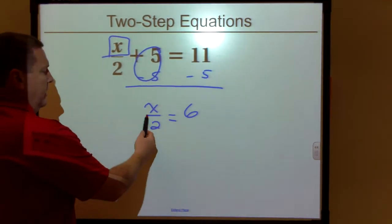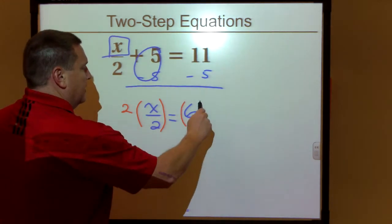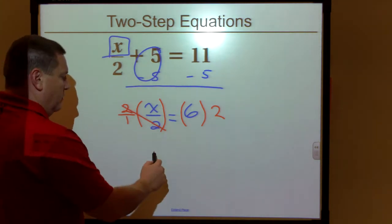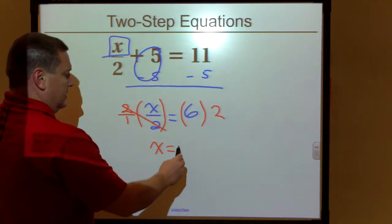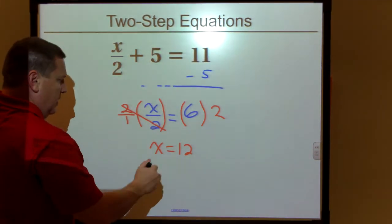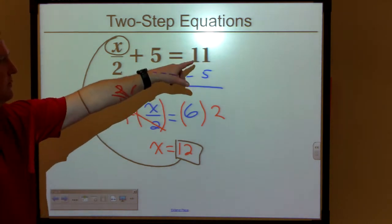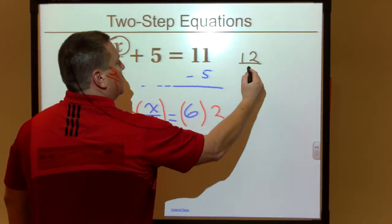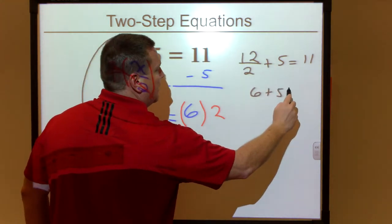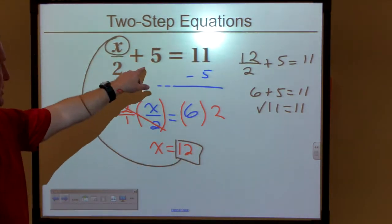On our next step, we're going to undo the division of two, so to undo that we're going to times by two on both sides. Two divided by two becomes one, and one times X is just X. Two times six gives you 12. So if this is correct, you should be able to take this 12, put it back in place of X, and follow the normal order of operations to see if it equals 11. So 12 over two plus five should equal 11. We do divide first: 12 divided by two is six, six plus five equals 11. That checks out — X equals 12 makes the original problem true.